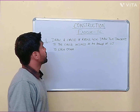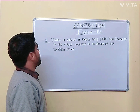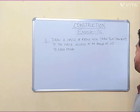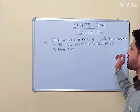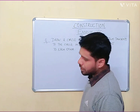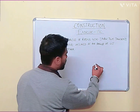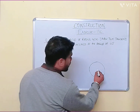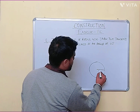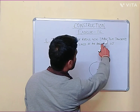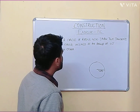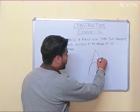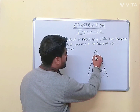Hello everyone. I am doing construction 11c. The question is: draw a circle of radius 4 centimeters, then draw two tangents to the circle inclined at an angle of 60 degrees to each other. That means first you have to draw a circle, and the radius will be 4 centimeters, then draw two tangents at an angle of 60 degrees to each other.